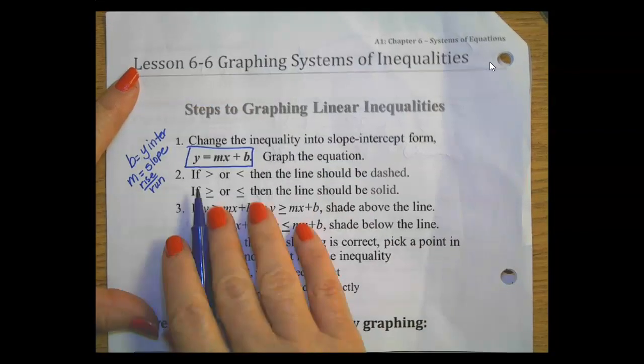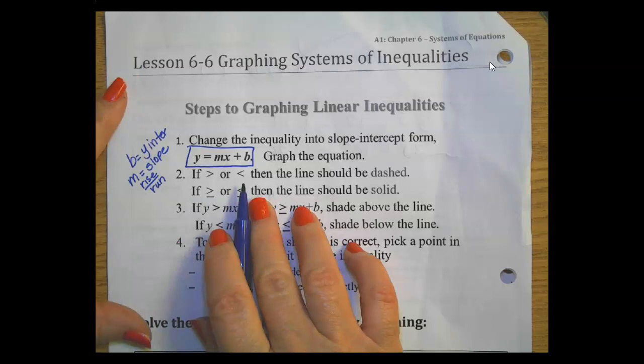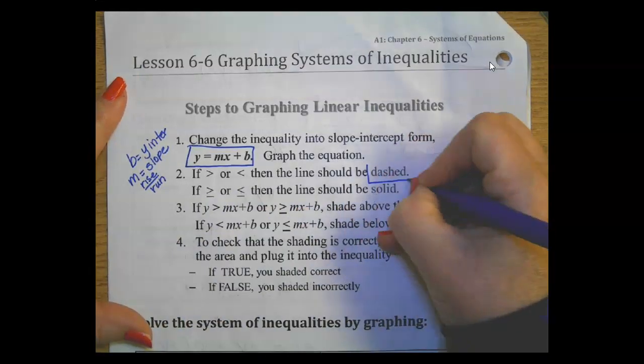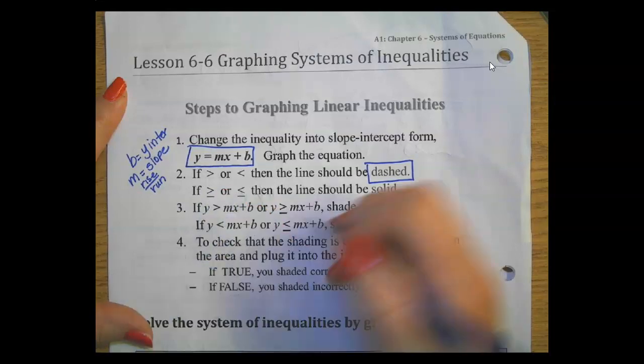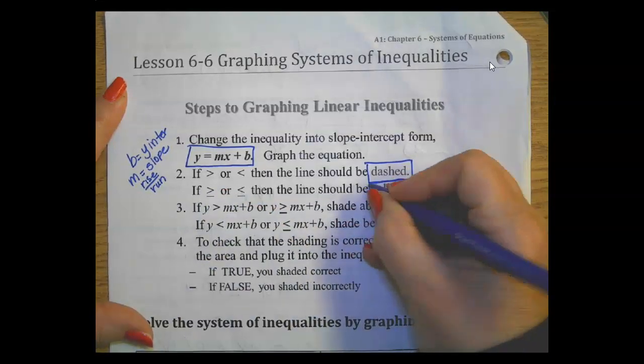Greater than or less than, you should have a dashed line. If it's got the greater than or equal or less than or equal, you'll have a solid line when graphing.